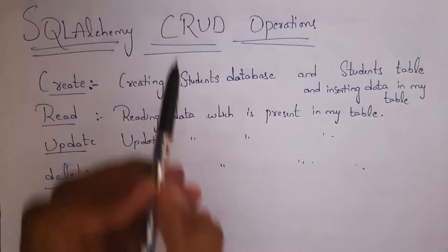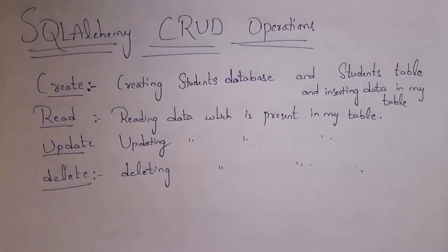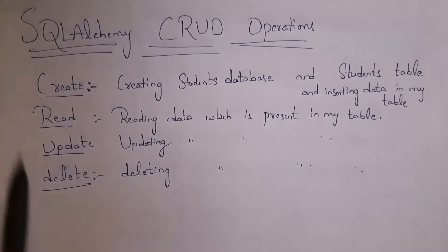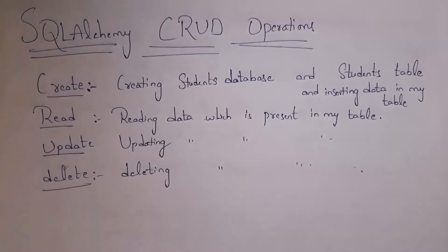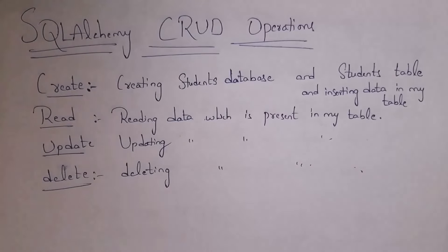CRUD means Create, Read, Update, and Delete. I will write a Python program to create a students database. Inside the students database we will insert a students table, and inside this table we will insert some data. Read means reading the data present in the table and displaying it on the output screen. Update means updating data in the table, and Delete means deleting data from the table.